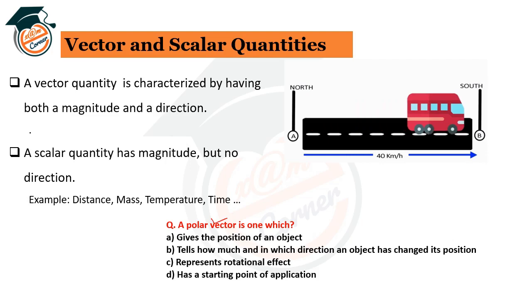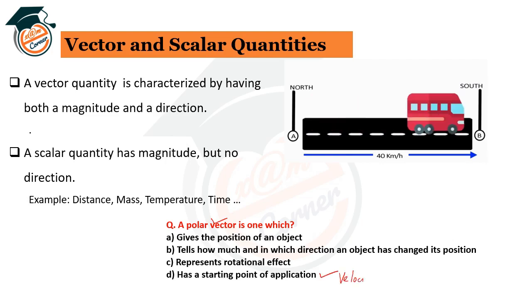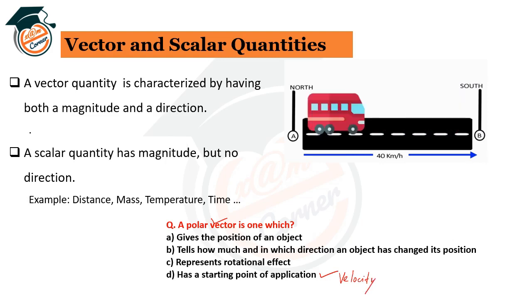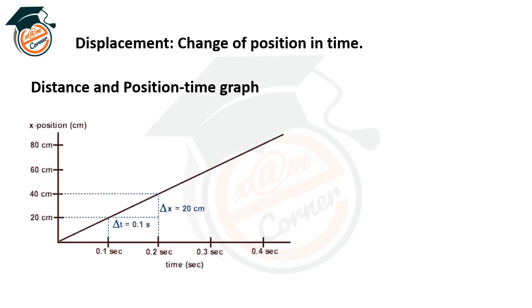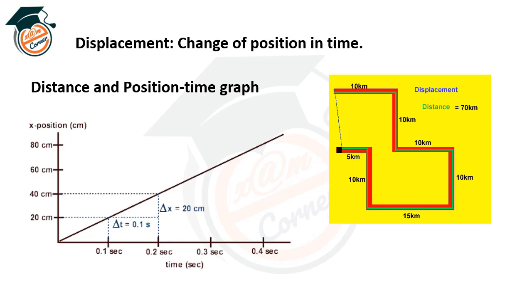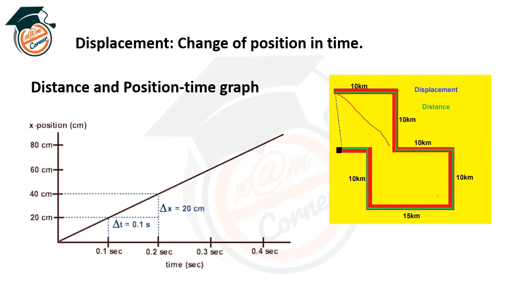A polar vector is a vector quantity that has a starting point of application. By definition, a polar vector has a starting point — for example, velocity is a polar vector. Displacement is the shortest path traveled between two points. For example, if a particle moves from A to B and back, the total distance may be 20 units, but the displacement is the straight-line distance from start to end.